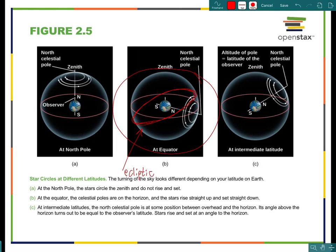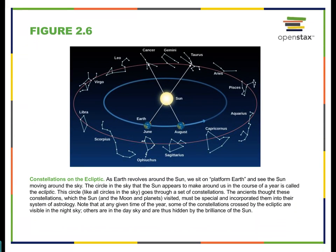The ecliptic was very important for ancient astronomers. All the groups of stars along that line — matched up with certain figures and animals — were given special deference and special names, and they became what we know as the zodiac. These are the constellations that lie in a circle along the ecliptic: Virgo, Leo, Cancer, Gemini, Taurus, Aries, Pisces, Aquarius, Capricornus, Sagittarius, Ophiuchus, Scorpius, and Libra.